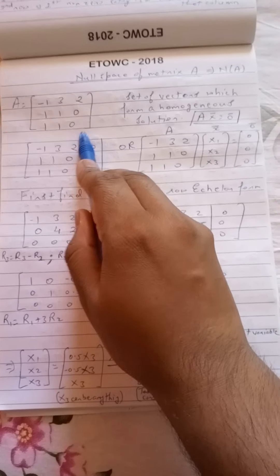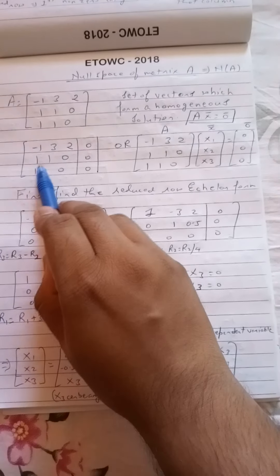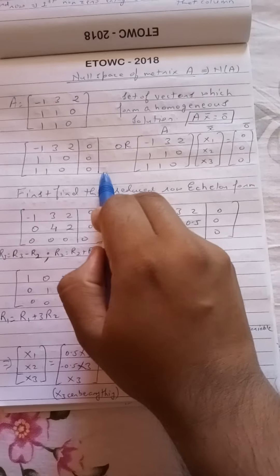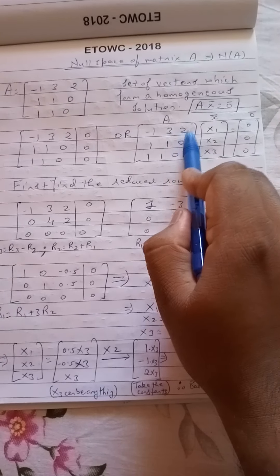So I write this matrix A in the form of this homogeneous equation. So I have written minus 1, 3, 2 and a line here showing 0 which belongs to the 0 vector, 1, 1, 0, 0, 1, 1, 0, 0.